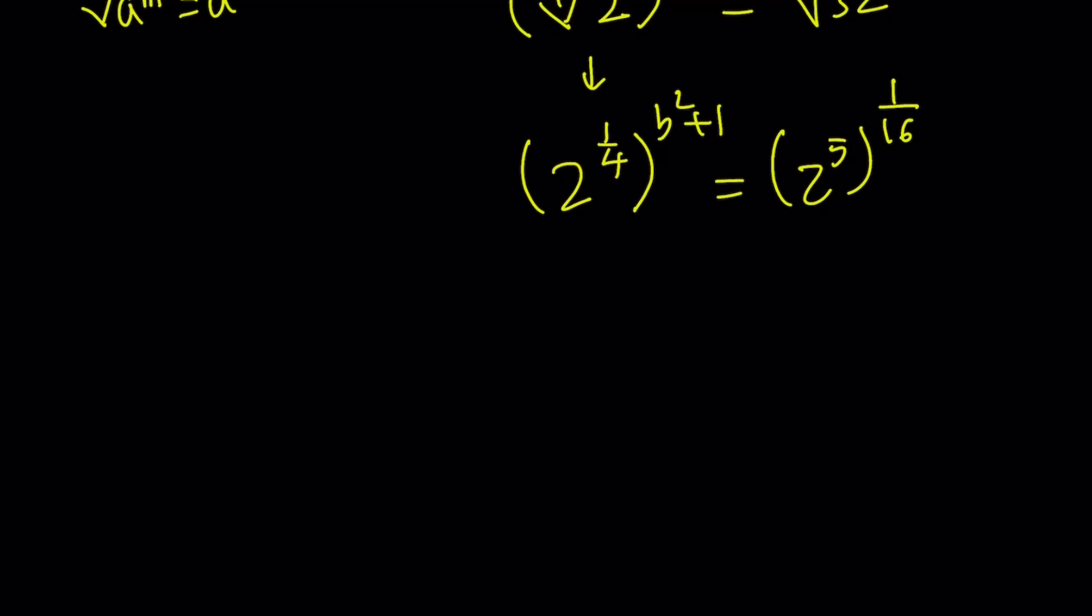Okay. It doesn't matter. We can switch them around too. Let's multiply the exponents. The first one gives us 2 to the power b squared plus 1 over 4. The second one gives us 2 to the power 5 over 16. The bases are equal, so the exponents are also equal.